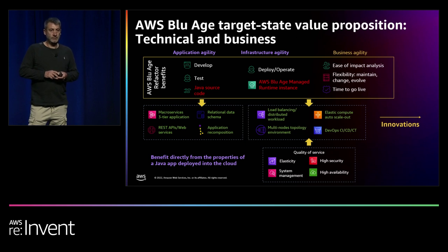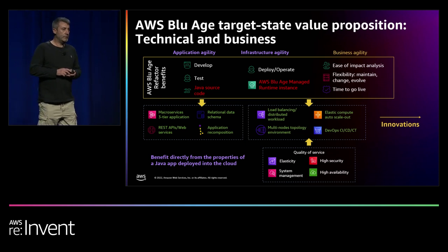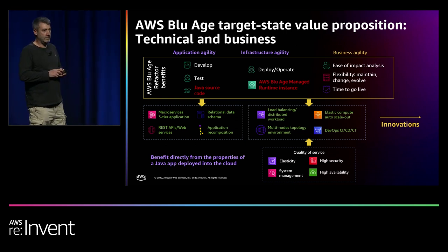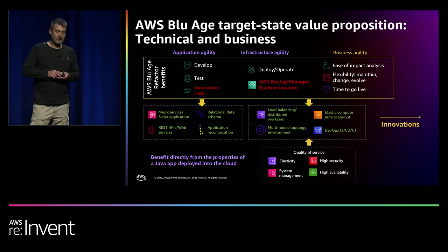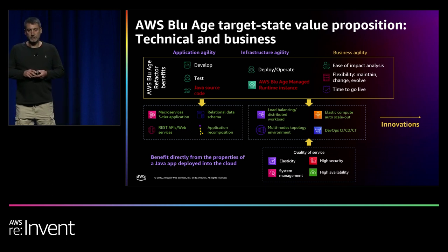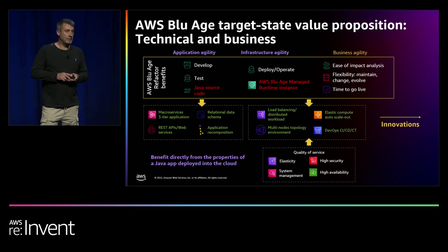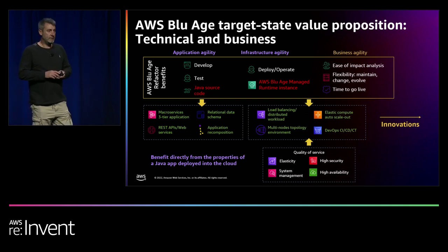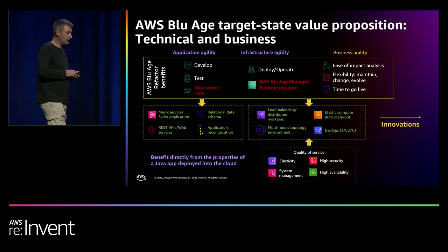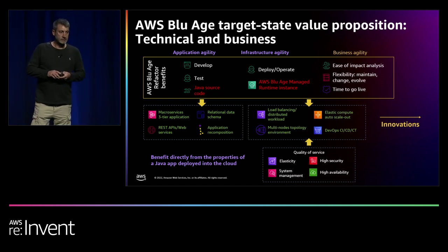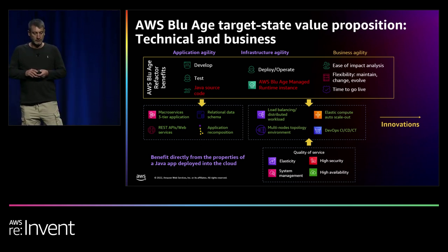The value proposition targets business agility. We want to eliminate all dependencies on legacy middleware and reimburse your technical debt so you can maintain and evolve the application more agilely — by implementing DevOps cycles and putting in place all the tools of the Java ecosystem so you can concentrate on your business and the evolution and maintenance of your application.